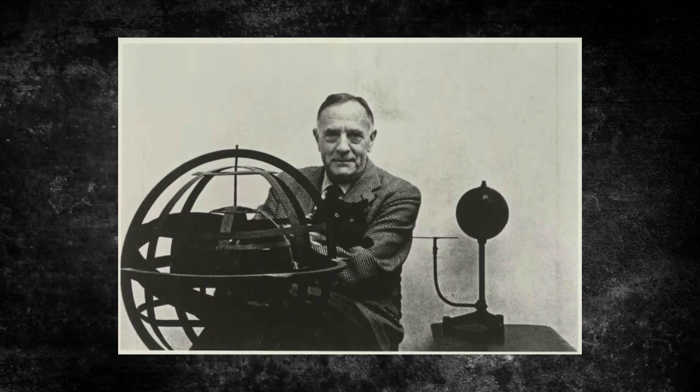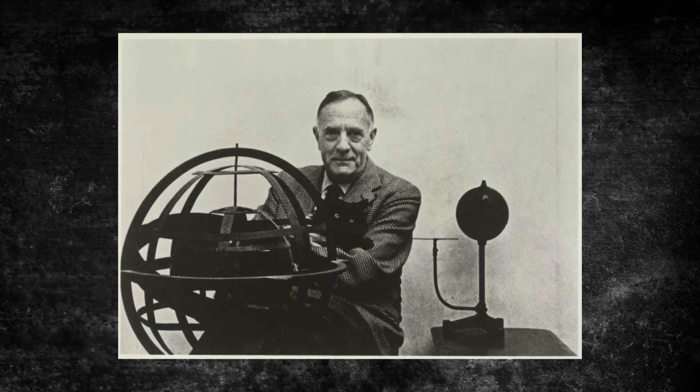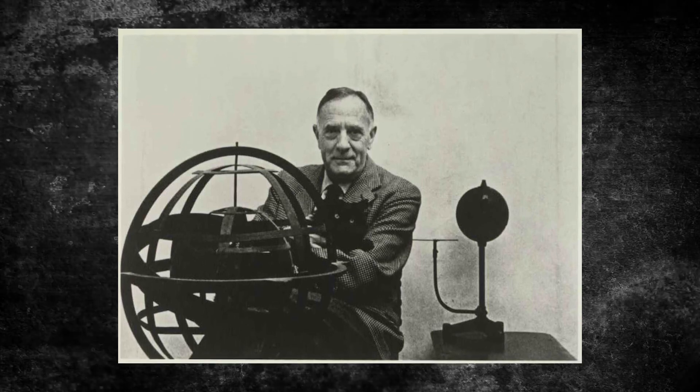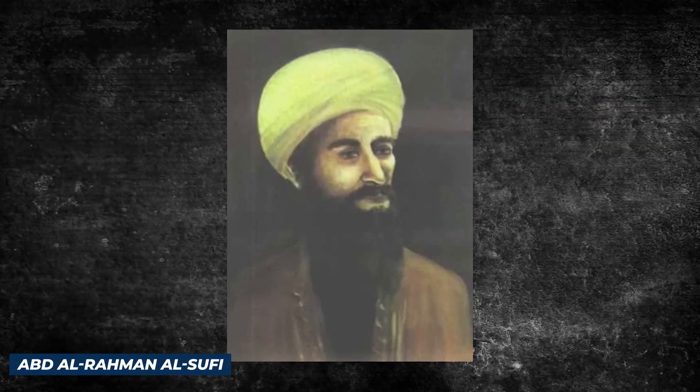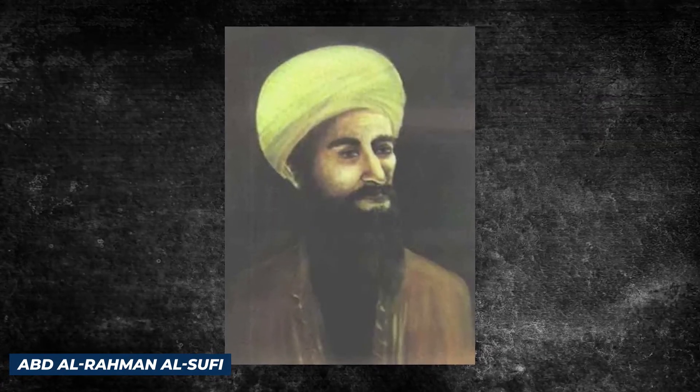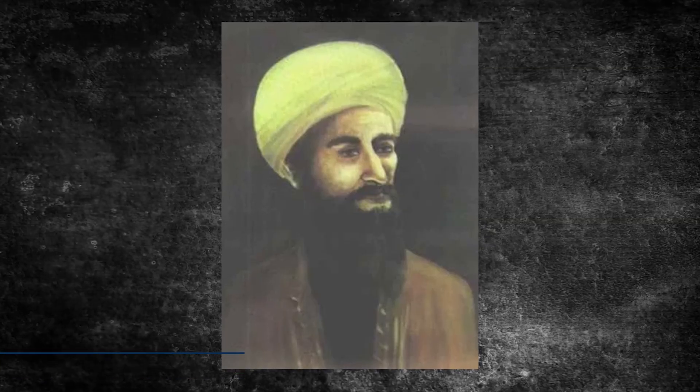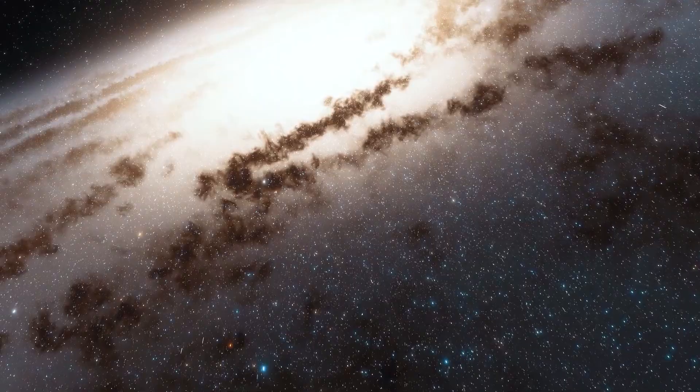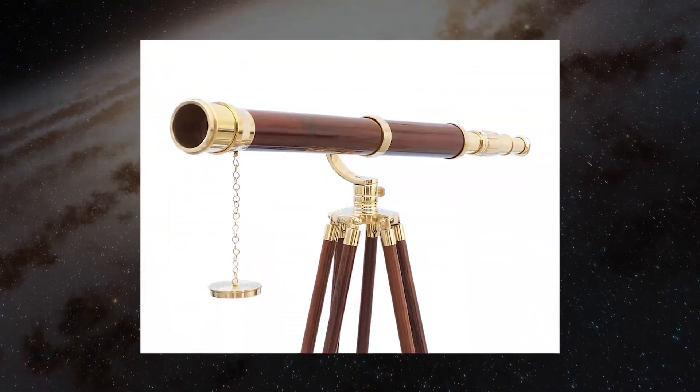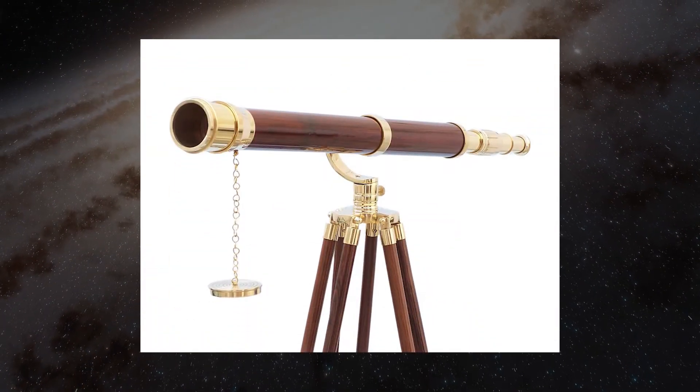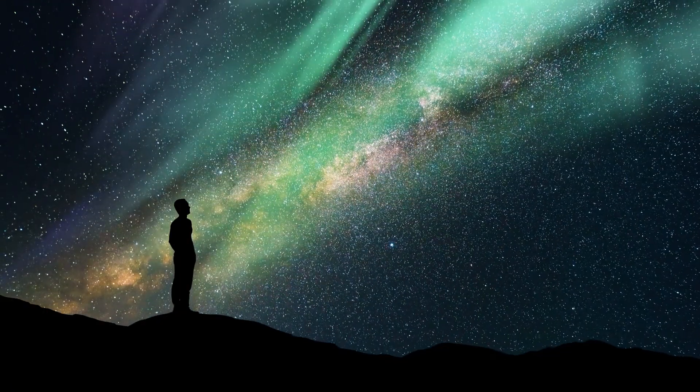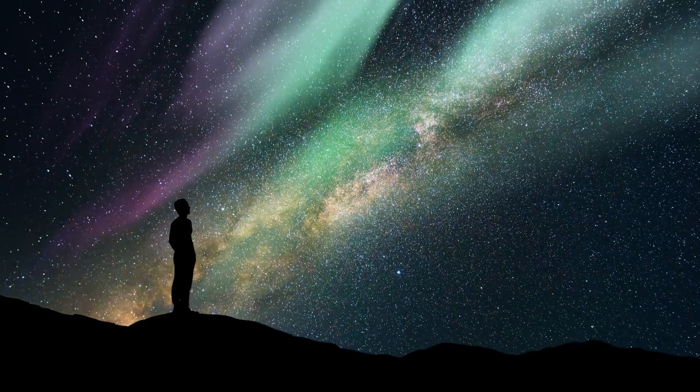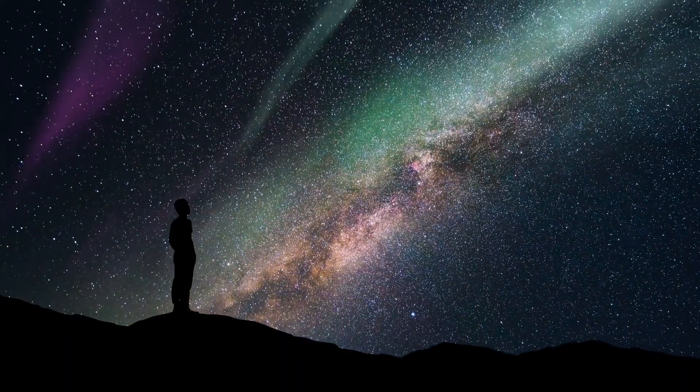Observers of Andromeda date back centuries, with one of the earliest records originating from the 10th century. Persian astronomer Abd al-Rahman al-Sufi described it as a small cloud in star charts from that period. What makes Andromeda particularly fascinating is that it can be seen from Earth's surface without the need for telescopic instruments. Al-Sufi was able to identify this distant cosmic entity solely through his keen eyesight and observations.